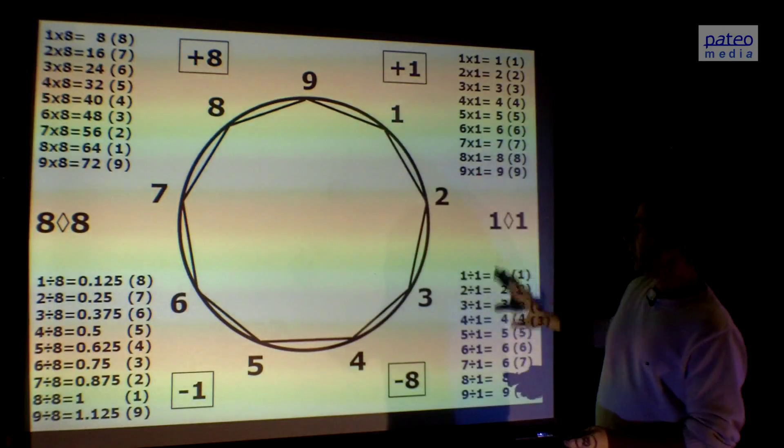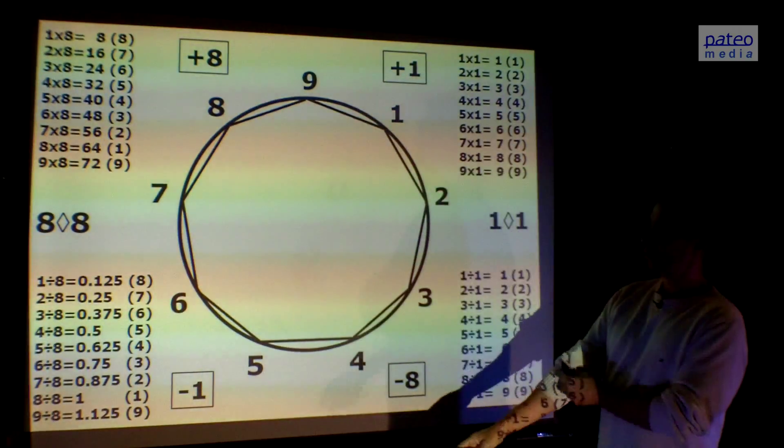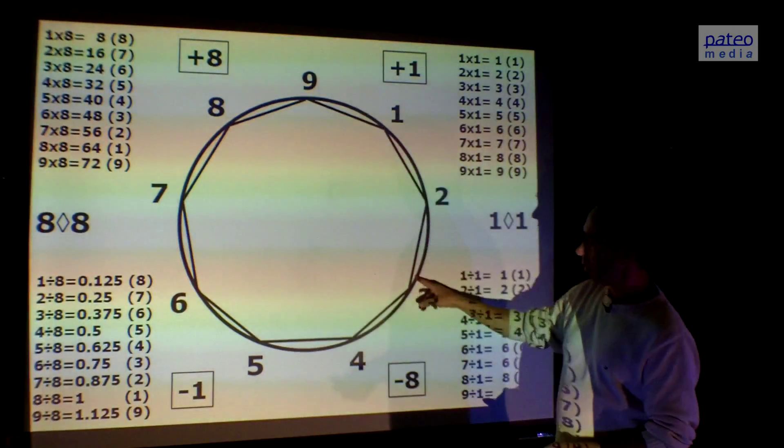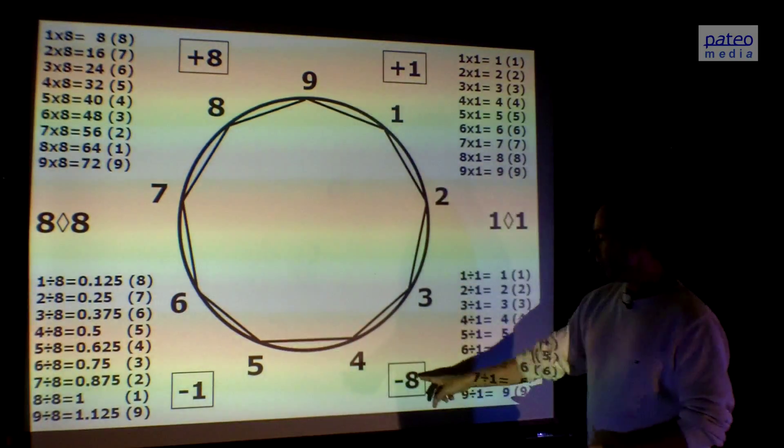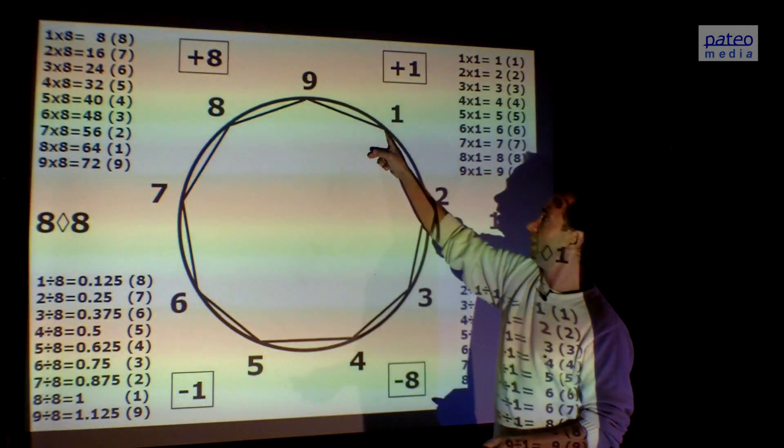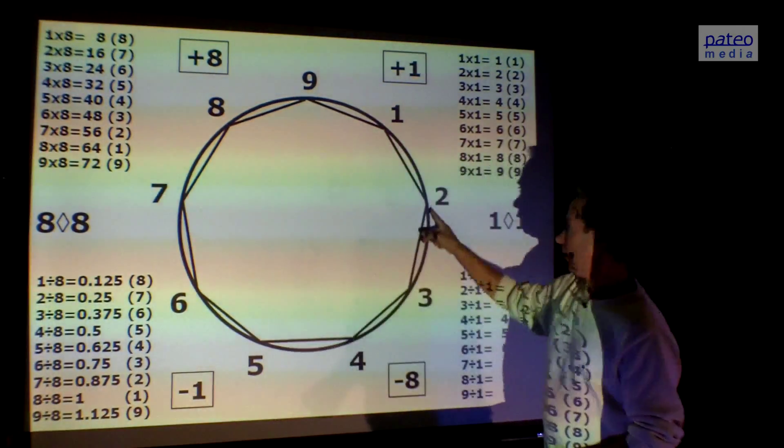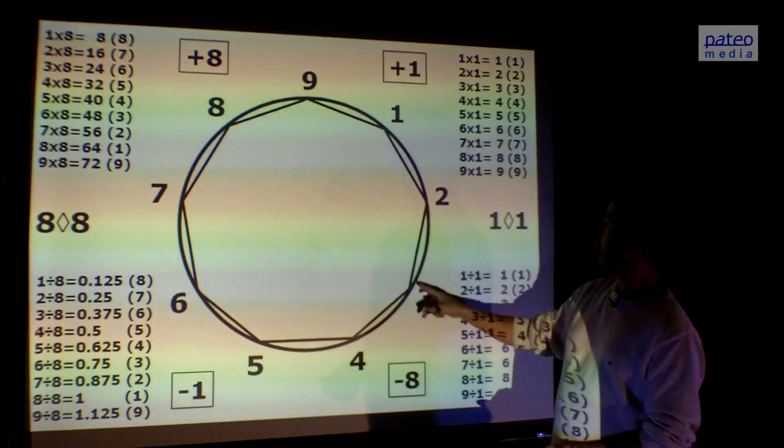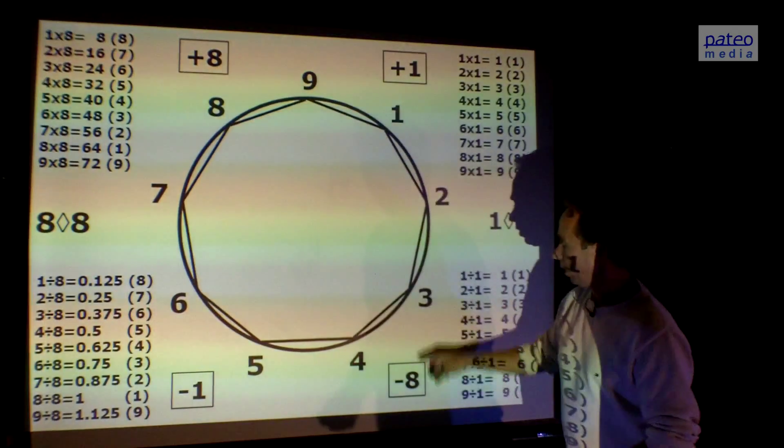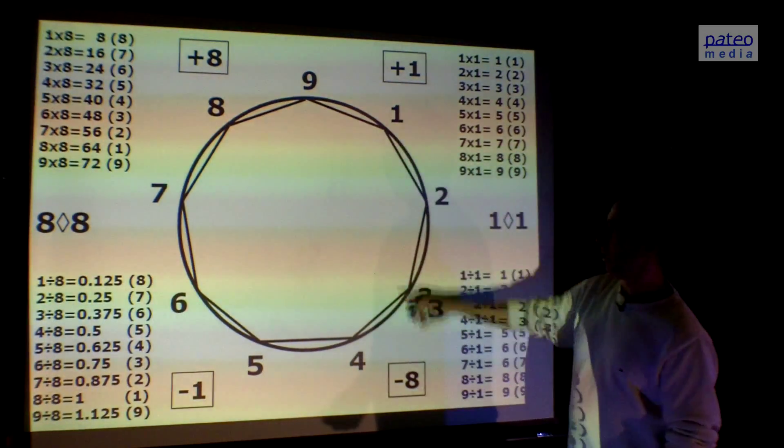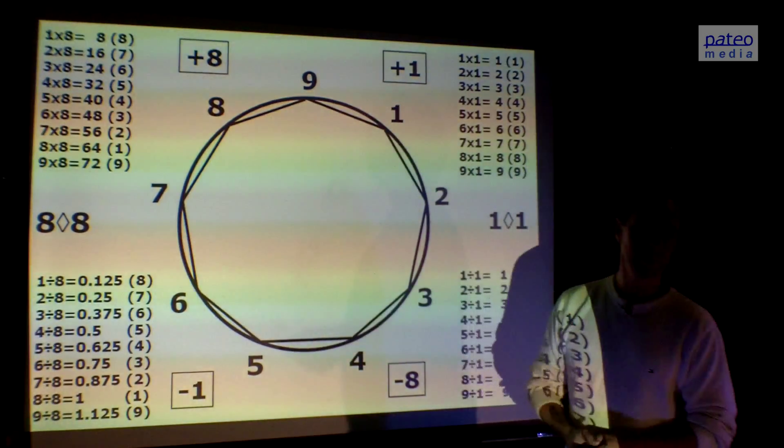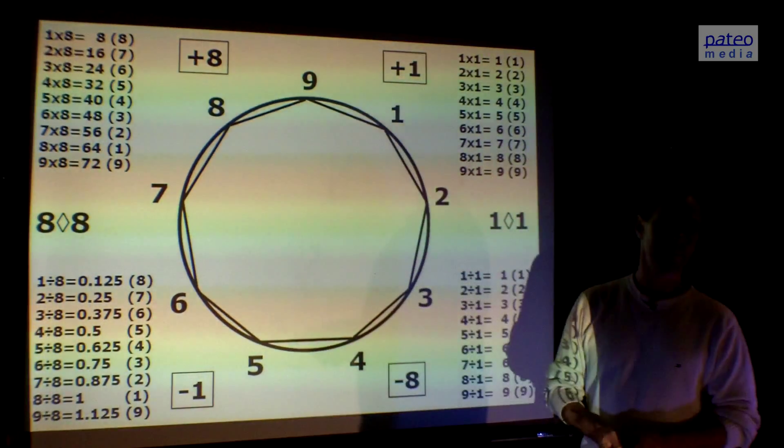This is multiplication and dividing, but also adding and subtracting. Adding one, you go clockwise around the circle. Or if you subtract eight, you come all the way around. It's the same. If you add one or subtract eight, you go clockwise. But if you add eight or you subtract one, then you go counterclockwise.